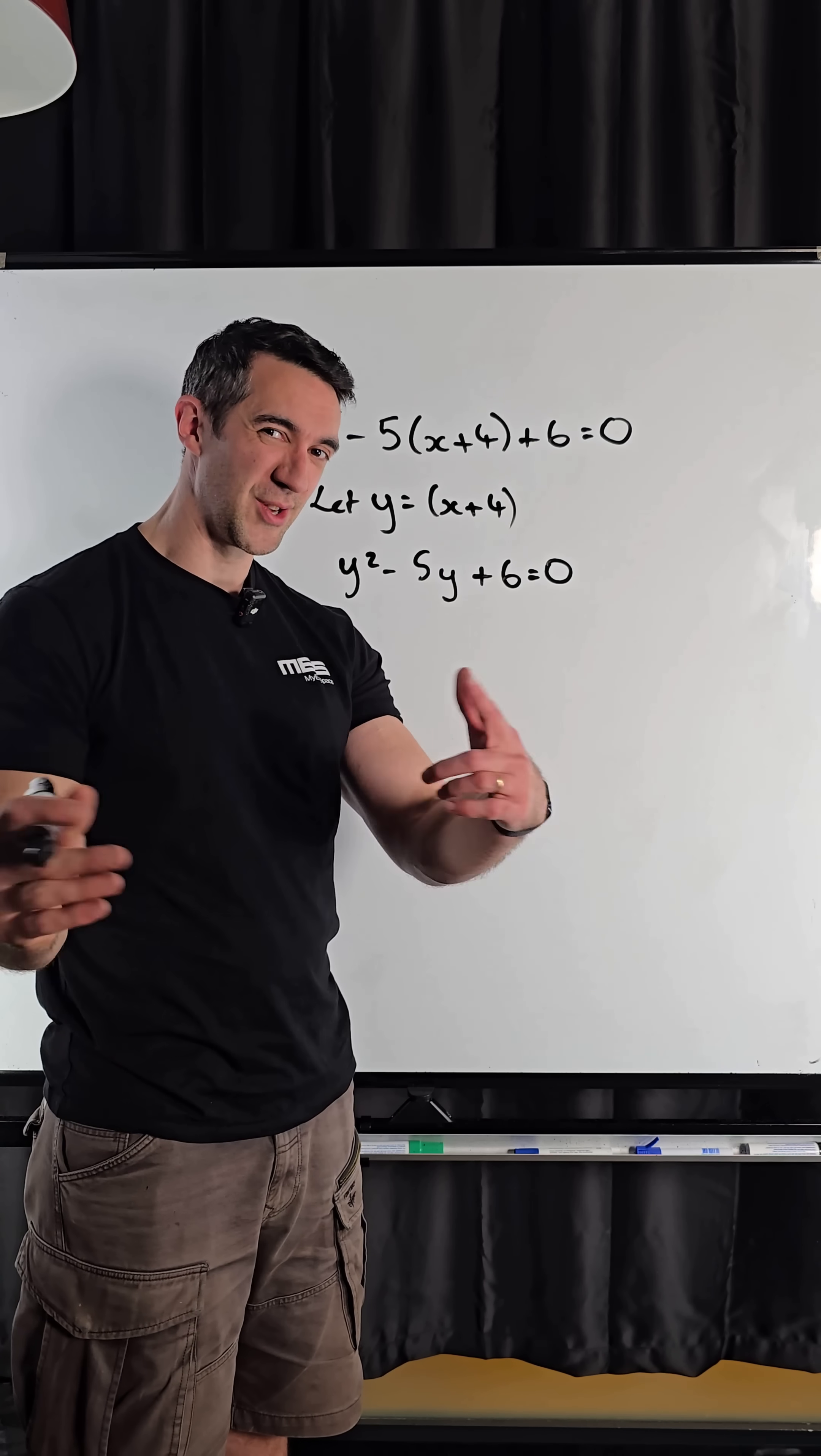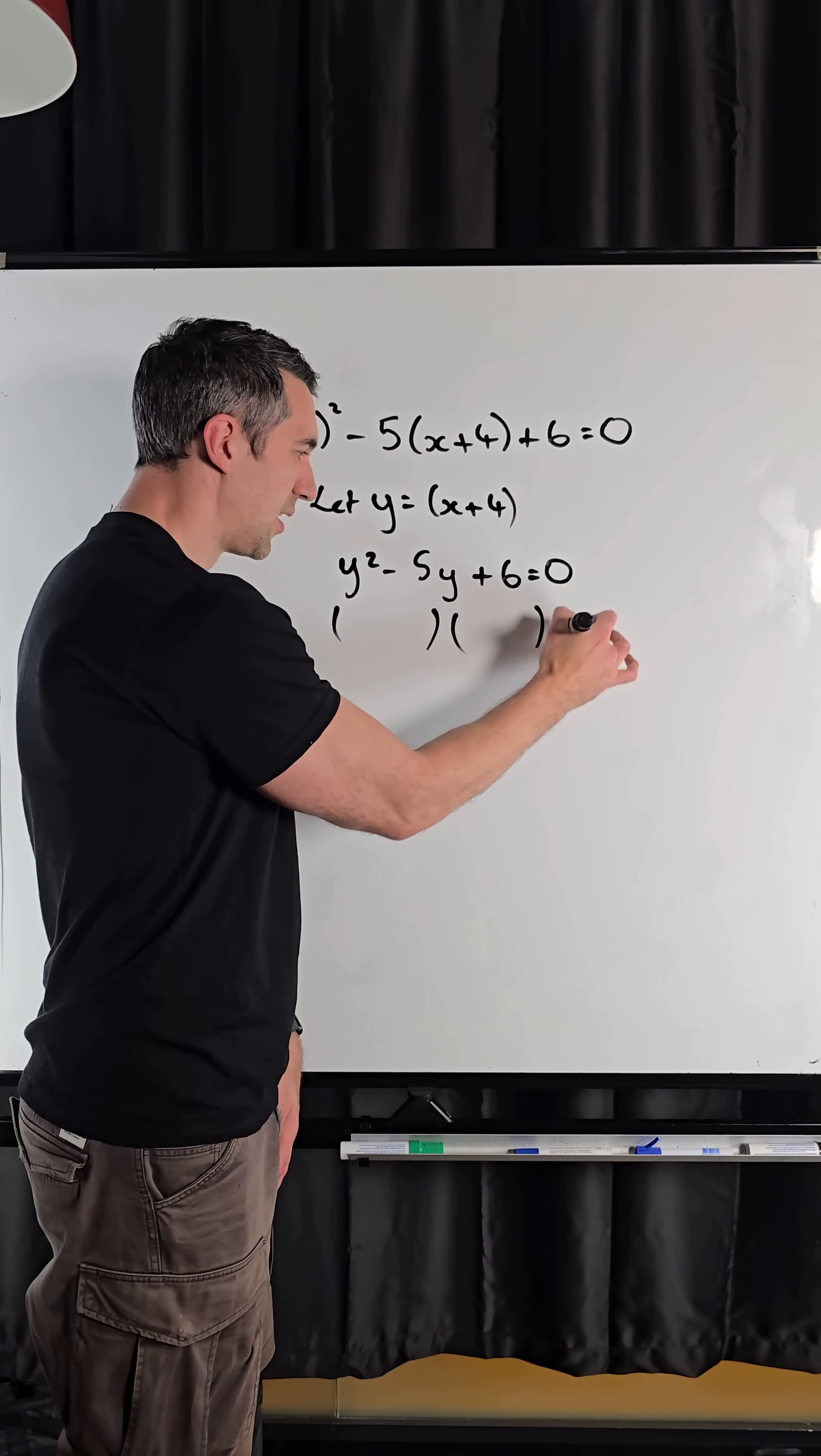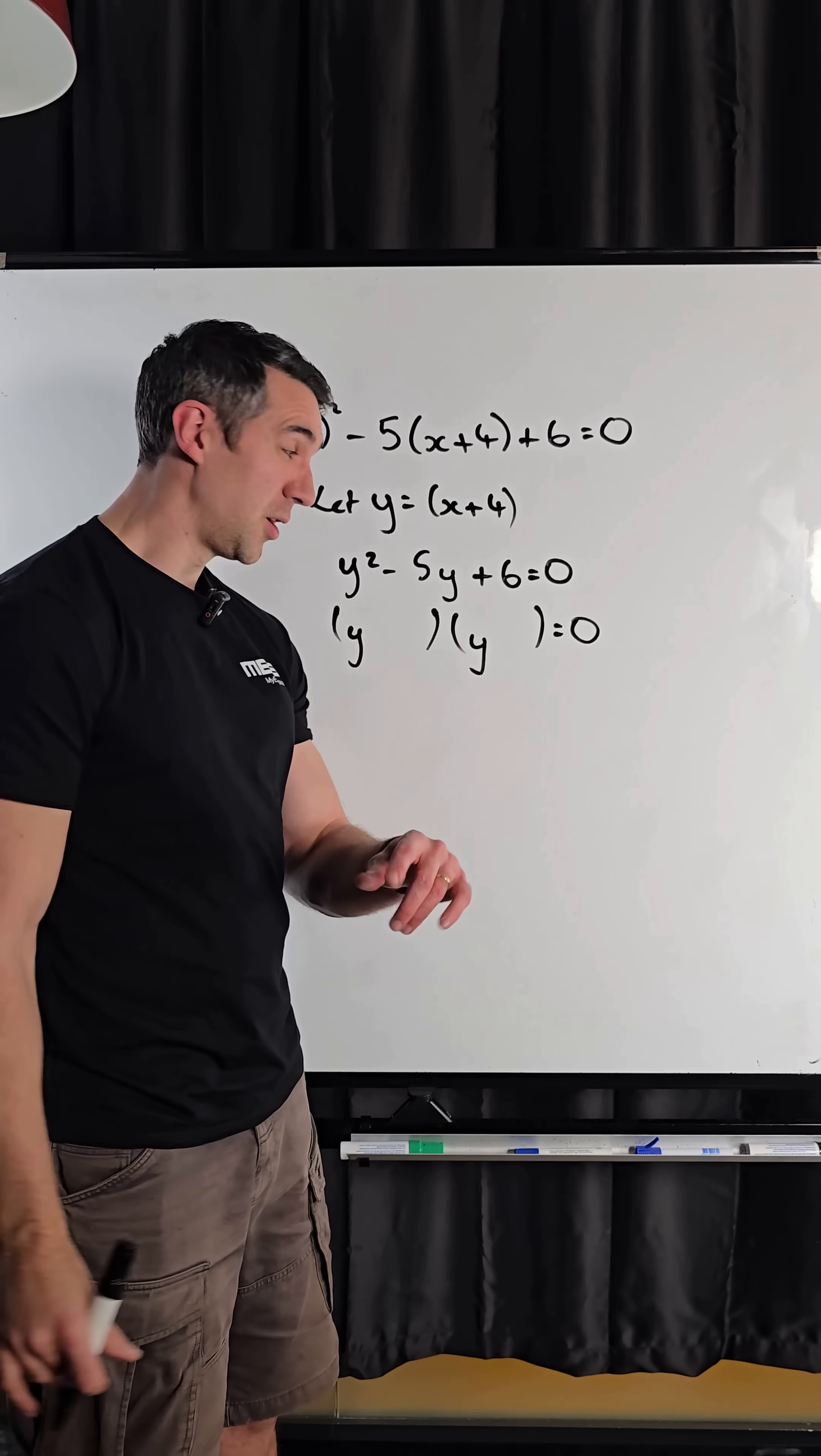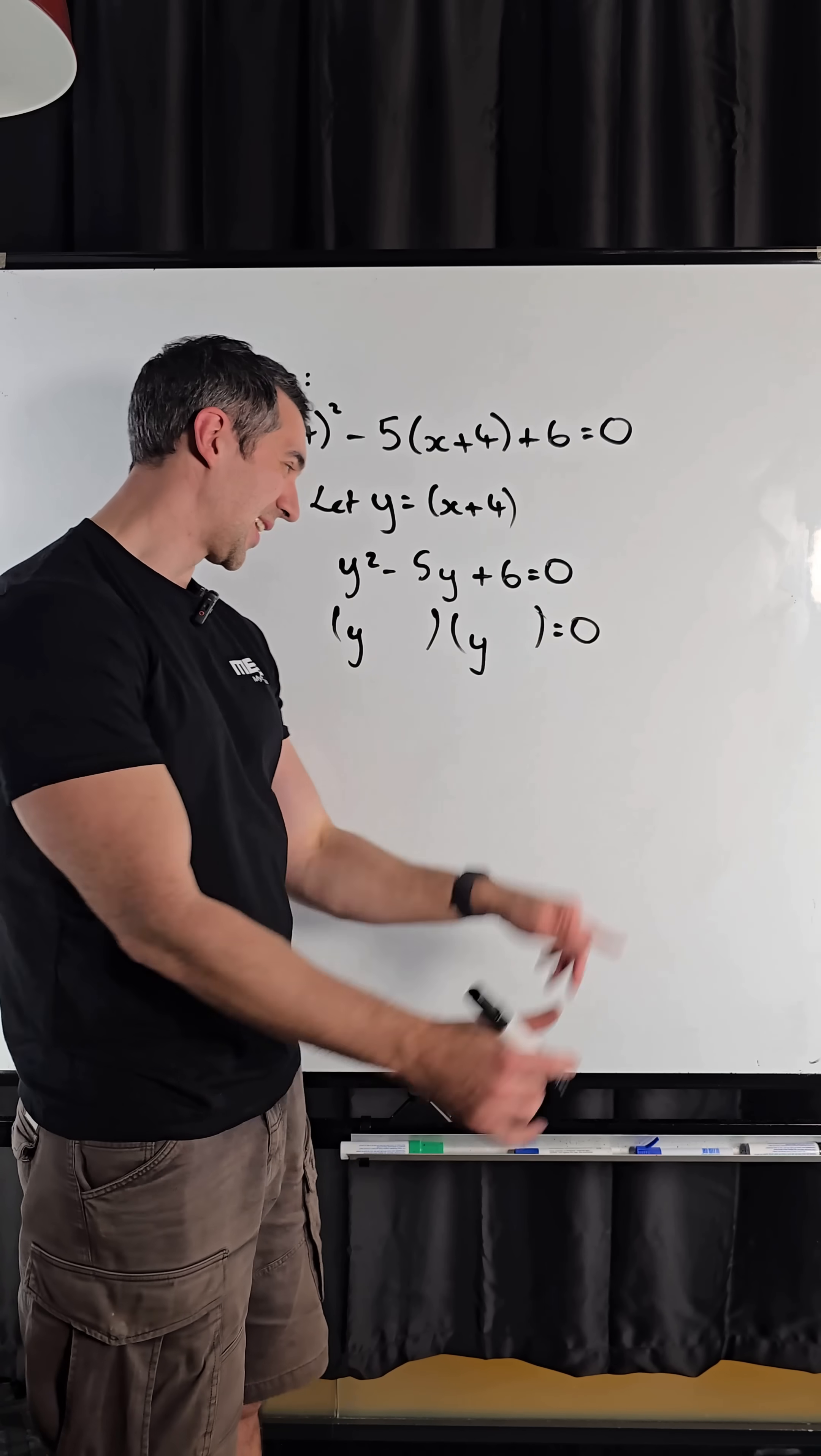And now that is a normal quadratic equation that you guys all know how to factorize. So we're going to stick it into our two brackets. Remember we're going to put a y at the front of each. We know that we're trying to get two numbers that will add to make minus 5 and multiply to make plus 6.